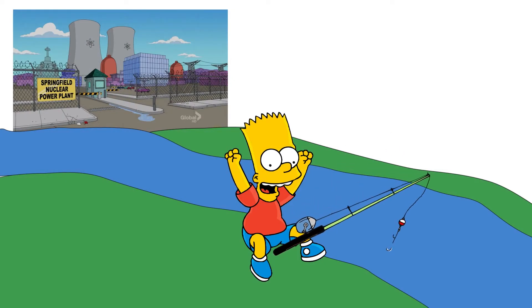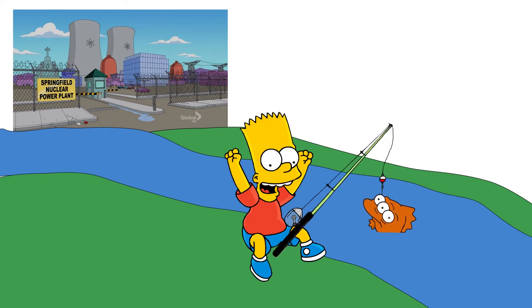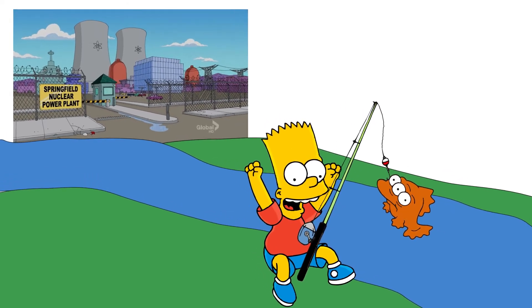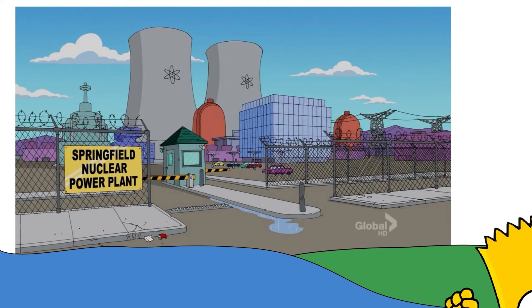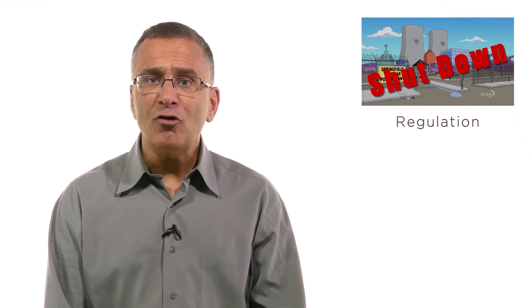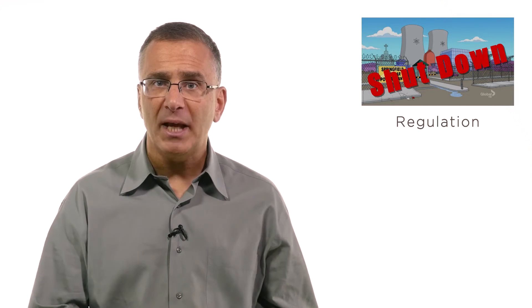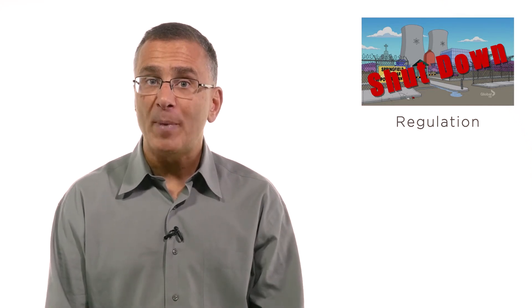Externalities are common enough that you hear about them in pop culture, including in The Simpsons. In one episode from season two, Bart is fishing in a river downstream from the Springfield nuclear power plant. He catches a fish, but there's something wrong — the fish has three eyes. As a result, the Springfield power plant gets inspected and the government threatens to shut it down. This is an example of regulation, where the government decides the externalities from nuclear power are too high — essentially setting an optimal quantity of nuclear power of zero.